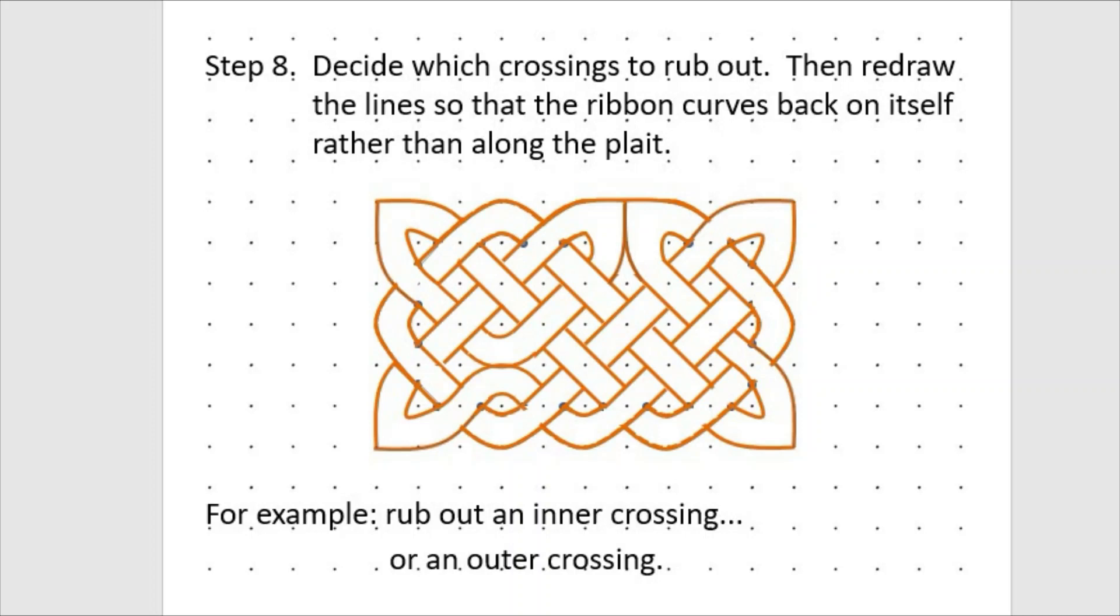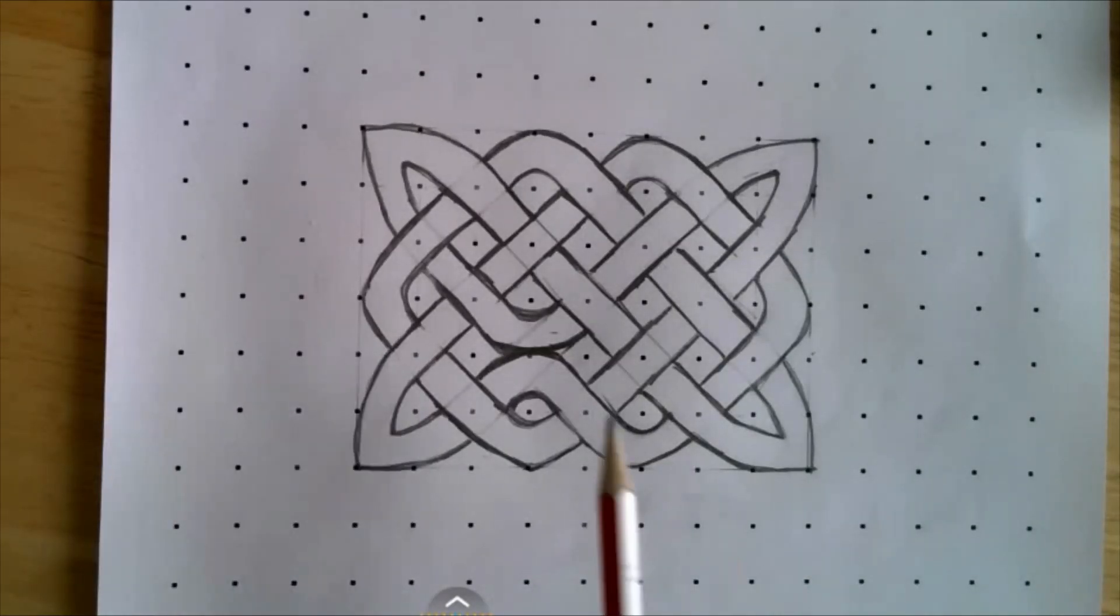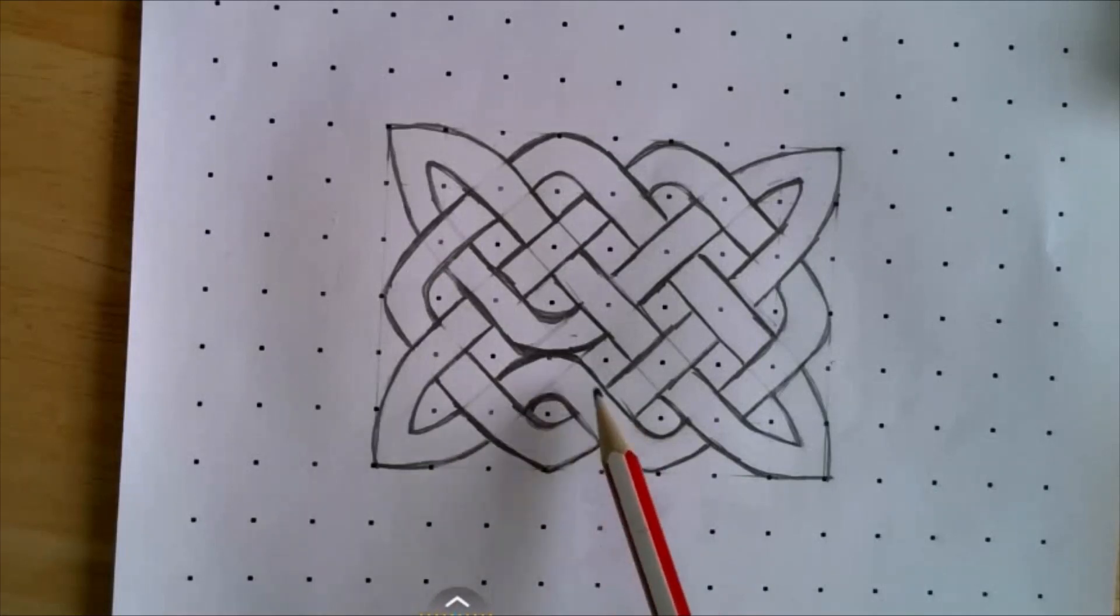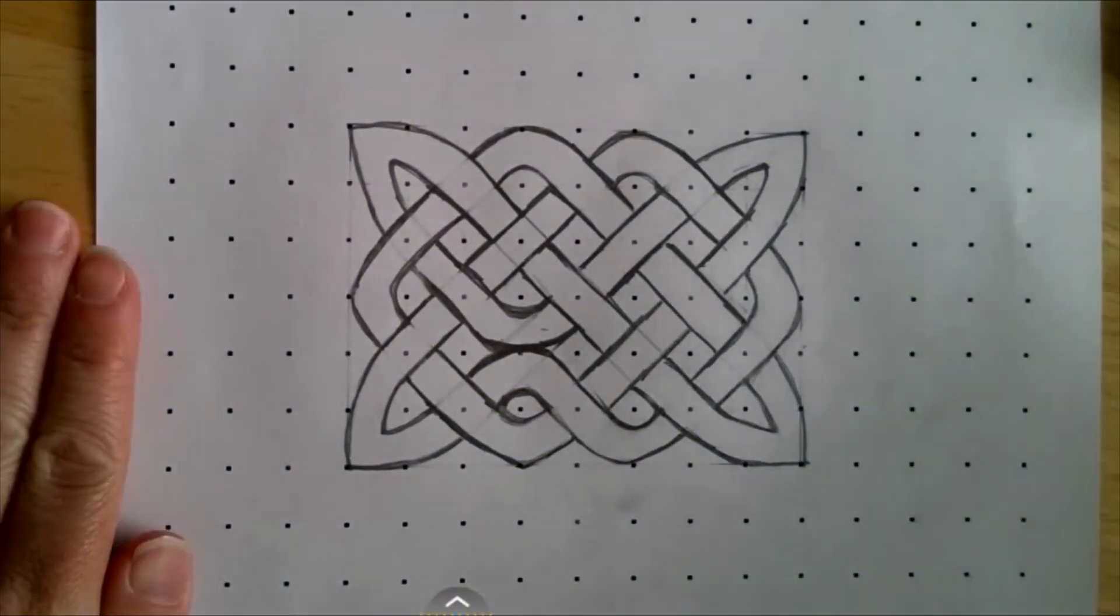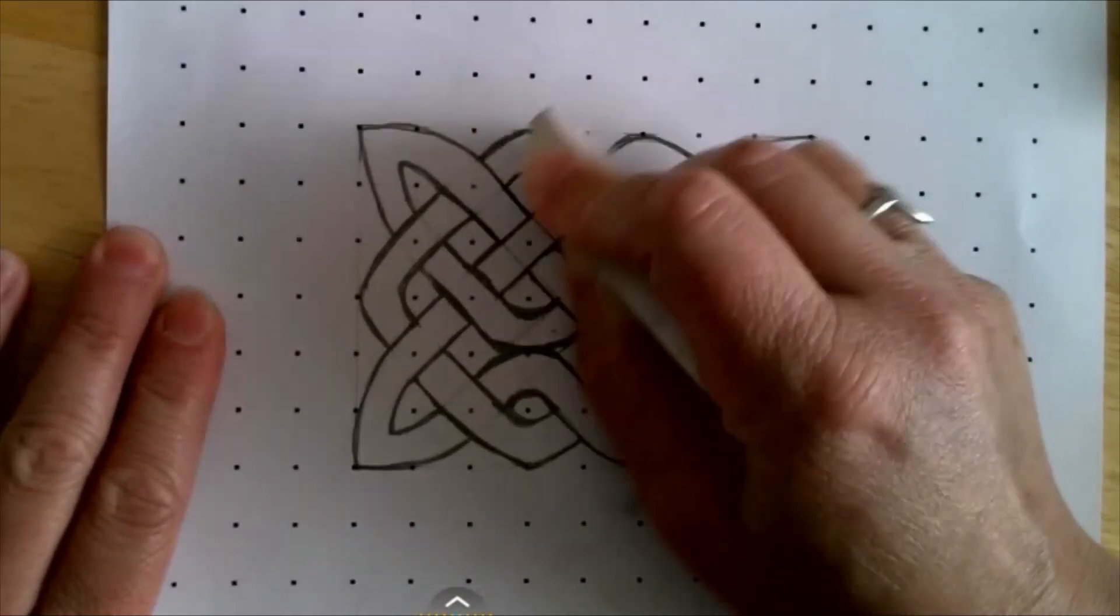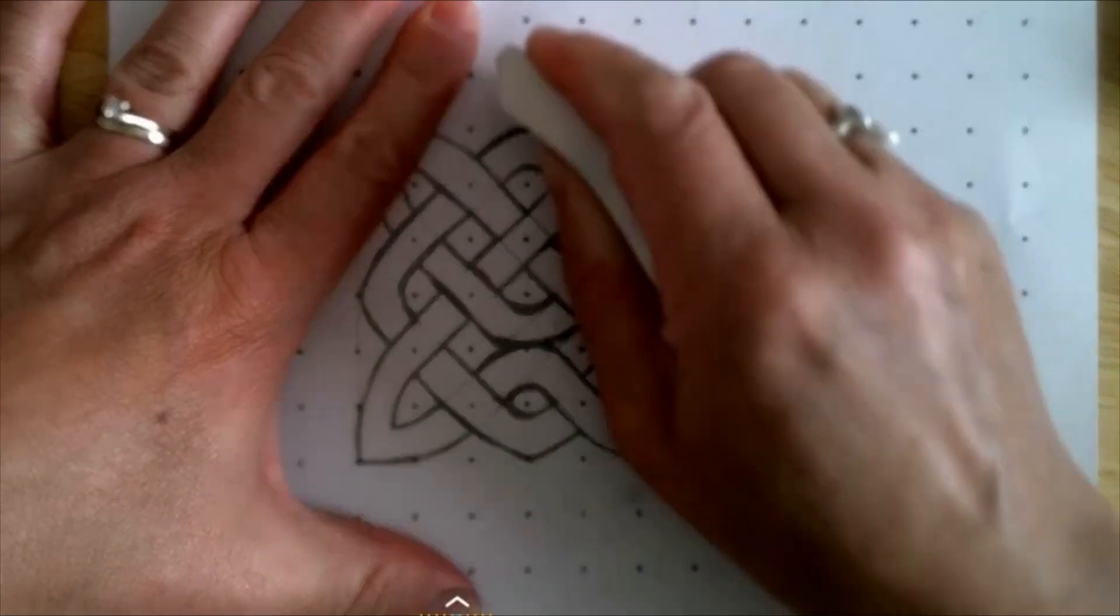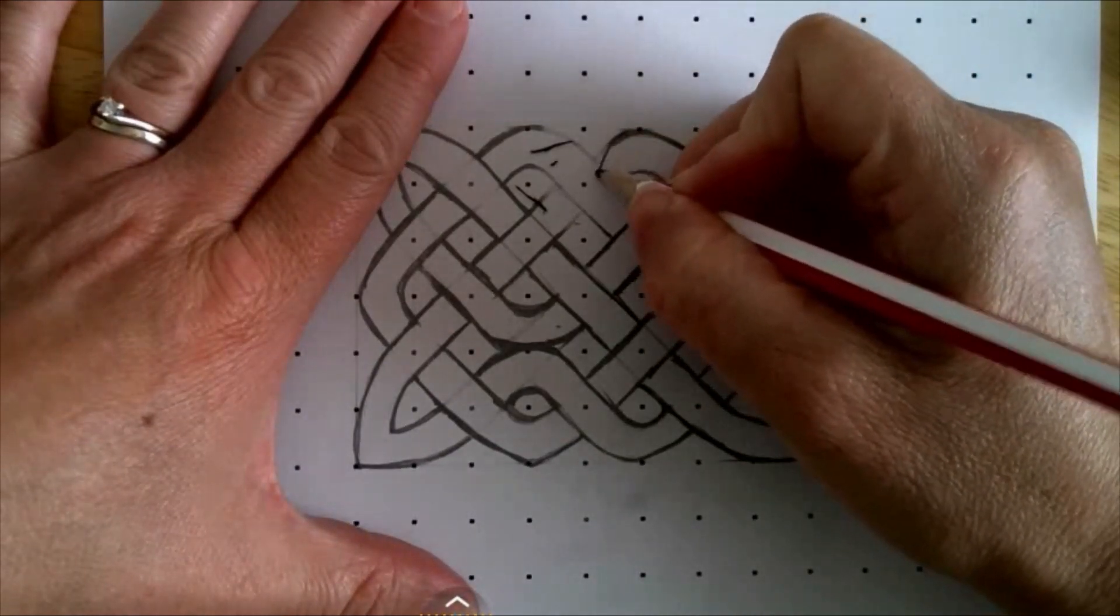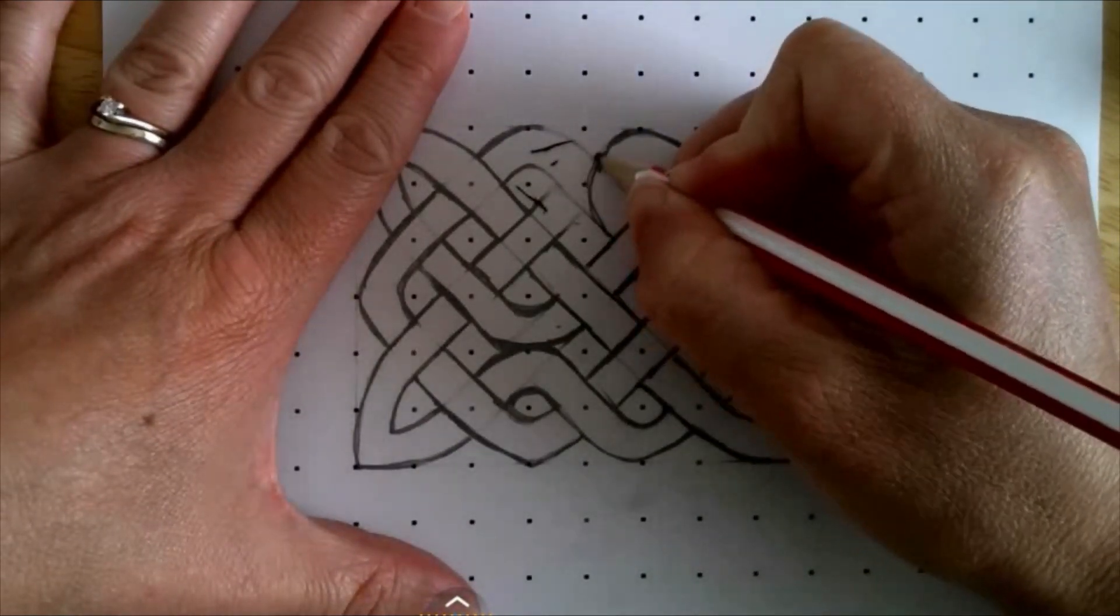Step eight is decide which crossings to rub out. Then redraw the lines so that the ribbon curves back on itself, rather than along with that. For example, we can rub out the inner crossing or the outer crossing. I'll show you how I've done this. On my knotwork, I have rubbed out this crossing here, and instead of it continuing on, it now continues back on itself. I could also do it on outer crossing. For instance, if I were to choose this part here, this crossing here. I could curve it back on itself.